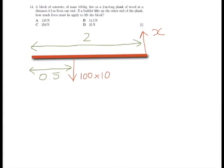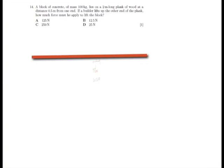So we'll begin by taking anti-clockwise moments. So x times two meters, 2x equals 0.5 times 1000. Now we can rearrange this to solve for x.